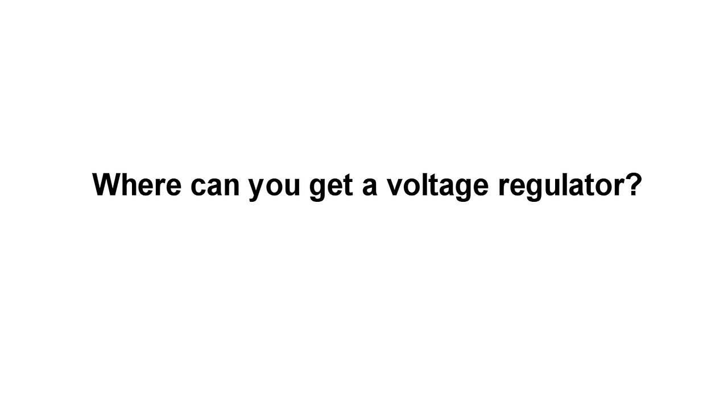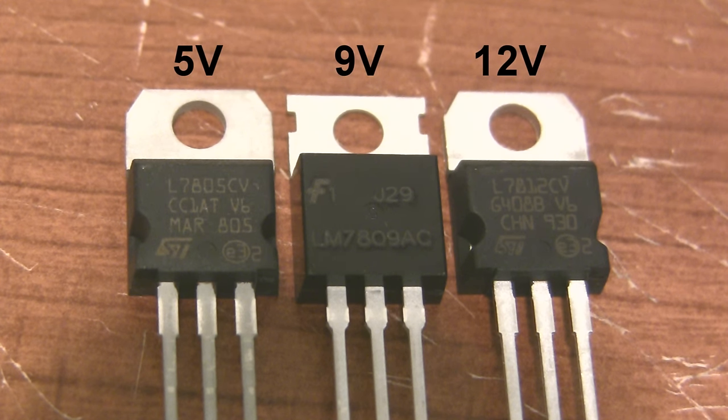Now how do I find a voltage regulator? Most voltage regulators begin with a few letters, then 78, and then they have two digits indicating the output voltage. So here I have an L7805CV, and the 05 indicates that it's a 5 volt regulator. The LM7809 is made by a different manufacturer, and it's a 9 volt regulator. And on the right we have a 12 volt regulator.